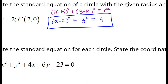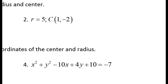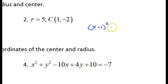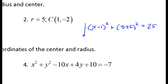This objective is pretty easy. I'll just do the opposite of these two. So x minus 1 squared, because of the positive 1. And then y plus 2 squared is equal to the radius squared, so 25. That's the standard form equation.